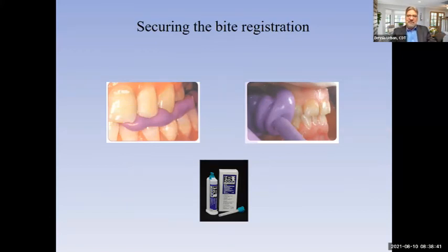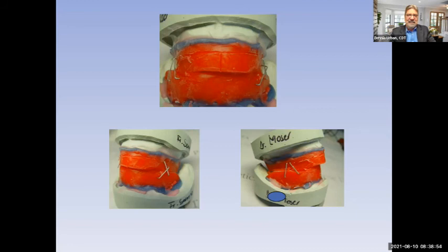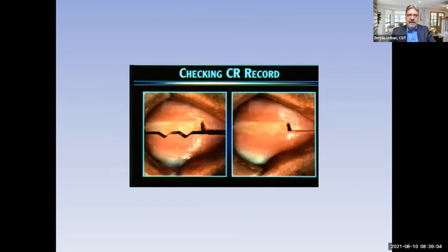Make sure you secure that bite registration before sending it back to the laboratory. I have old photos showing bite rims sent back with staples — they would move around during transport, and all the trouble you went through taking the registration was lost. Put V-cuts in the wax rims when doing an upper and lower occlusal record, and between them you can put some polyvinyl material, bite registration material, or wax.